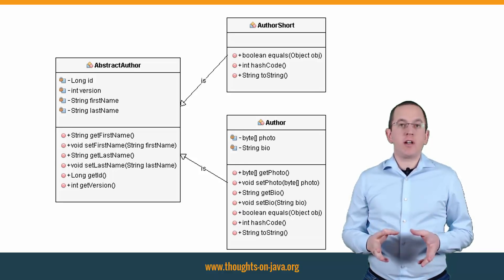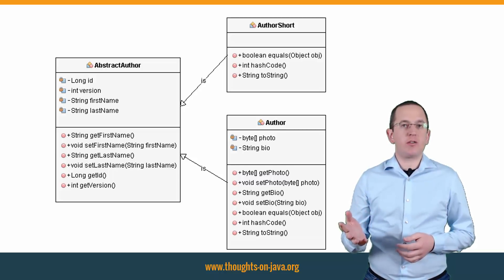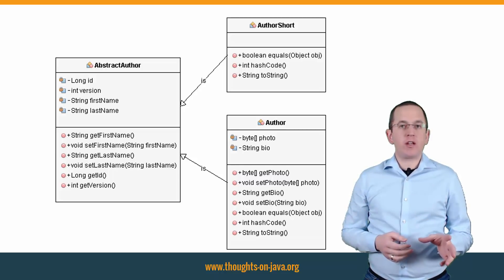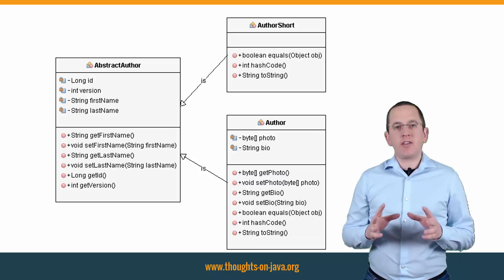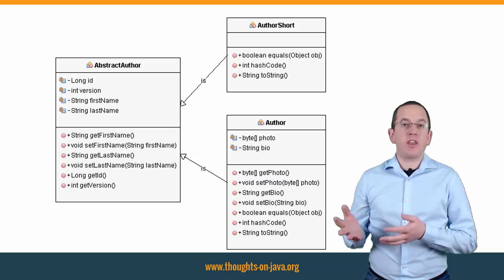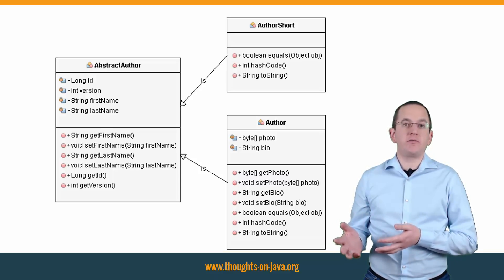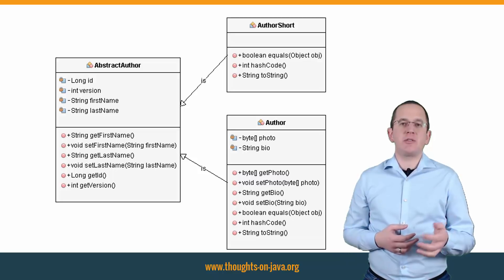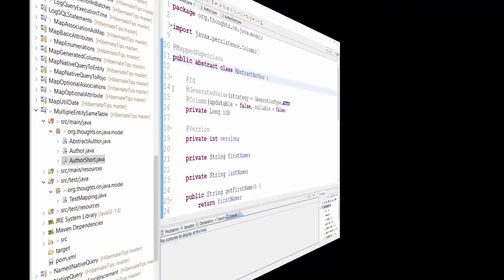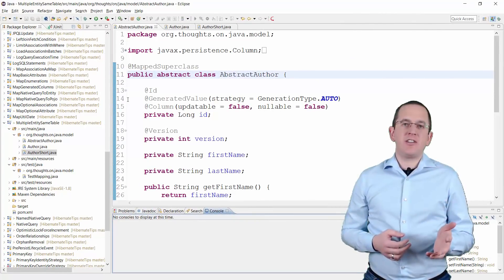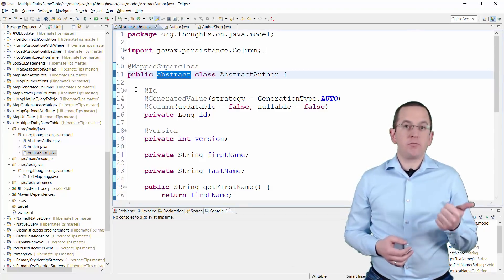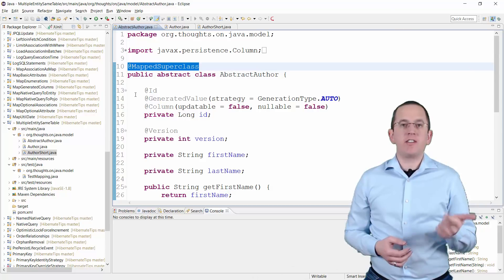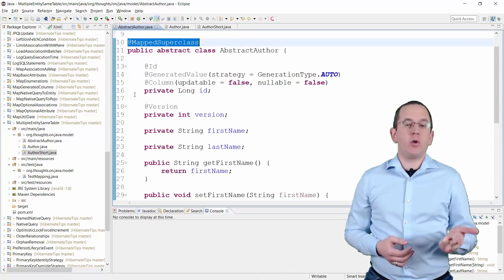The superclass — in this example a class called AbstractAuthor — should be abstract and contain all attributes that are shared by both entities. You should map it as a mapped superclass so that it is not an entity itself. Here you can see the AbstractAuthor entity. It's abstract, annotated with MappedSuperclass, and defines a mapping of all shared attributes.